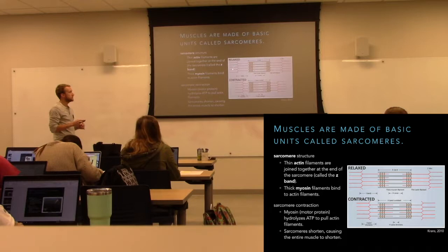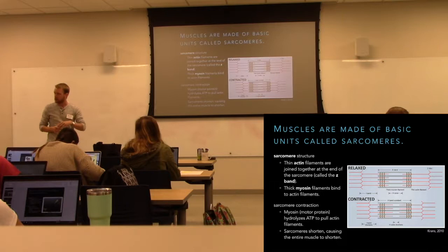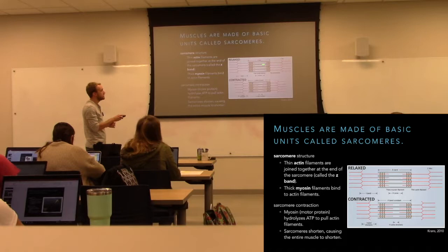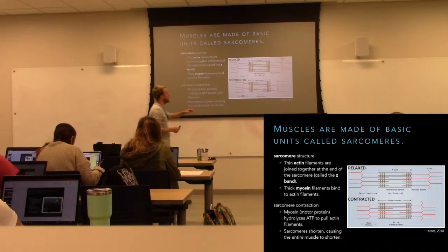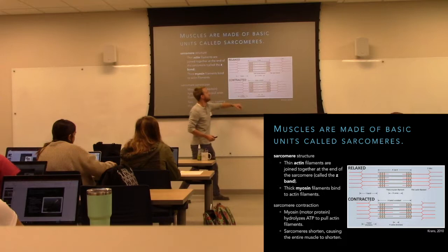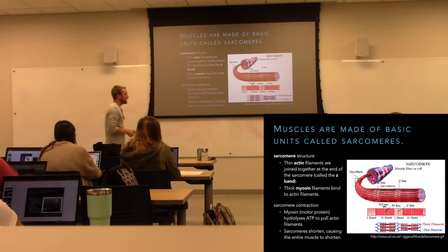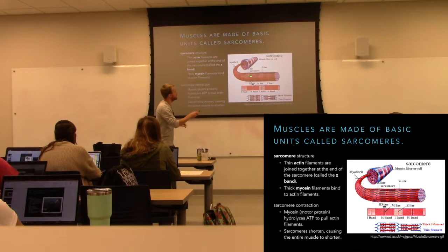The basic building unit of your skeletal muscles is the sarcomere. You have thin filaments of actin — the same actin we talked about before — and then you have thick filaments of myosin. Myosin is the motor protein that runs along actin. These myosin ATPases are the part that actually hydrolyzes ATP to move. These filaments don't change size; they just slide along each other to shorten the overall length of the sarcomere, shortening the muscle.